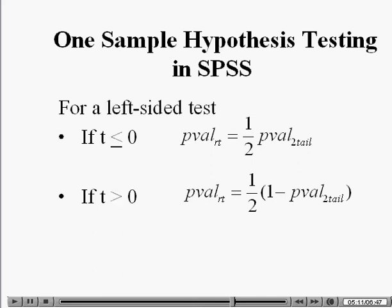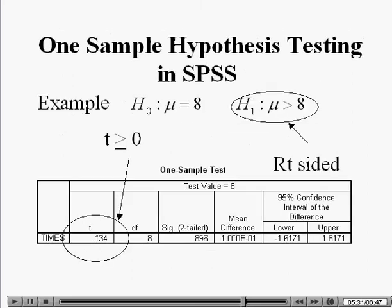Likewise, for the left-sided test, if the sign on the test statistic is negative, the p-value for the left-sided test is one-half of the p-value of the two-sided test. If the test statistic is positive, the p-value of the left-sided test is one-half of one minus the p-value of the two-tailed test. For our particular case, the p-value of the right-sided test will be one-half of the p-value of the two-sided test, since the test statistic is positive.